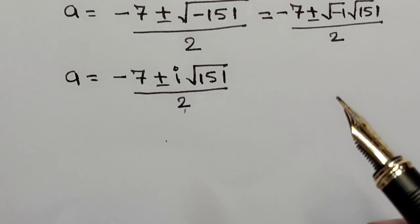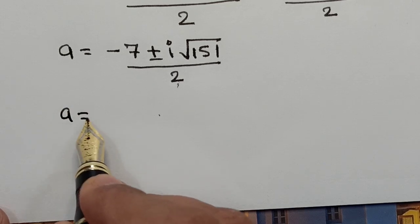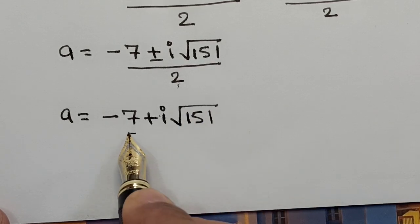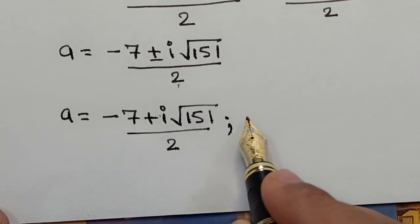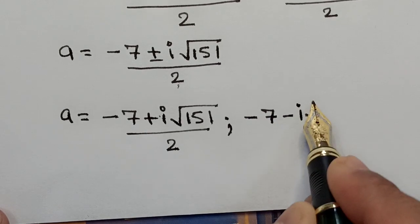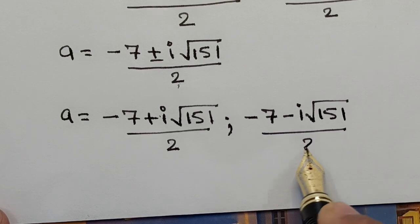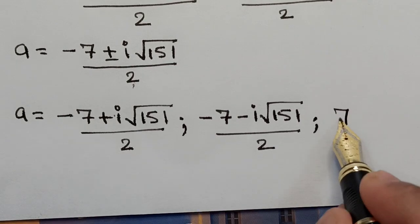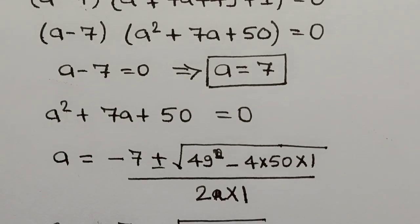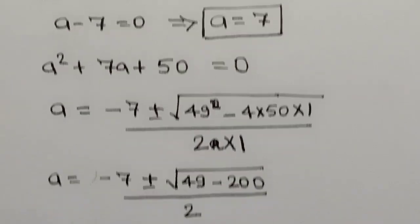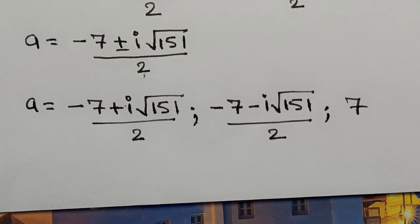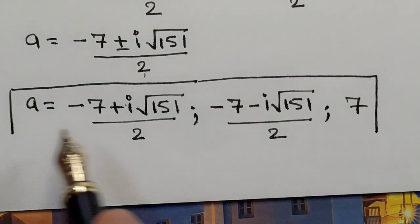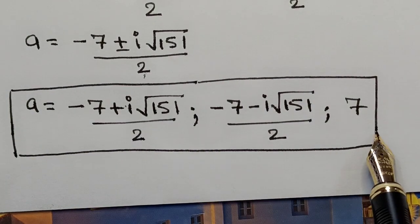This gives us the remaining two answers: A = (-7 + i√151) / 2 and A = (-7 - i√151) / 2. Combined with the earlier result A = 7, we have three total solutions, consistent with the equation having degree 3.